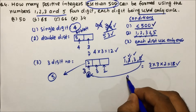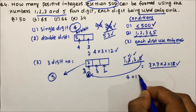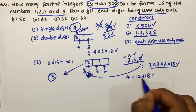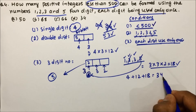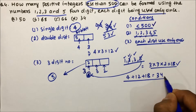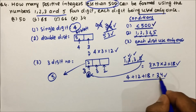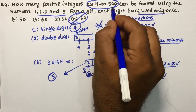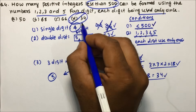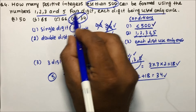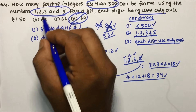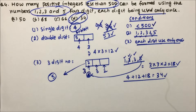The total is 4 + 12 + 18 = 34. So there are 34 positive integers which are less than 500 and use the digits 1, 2, 3, and 5.